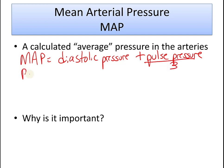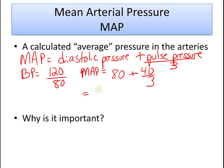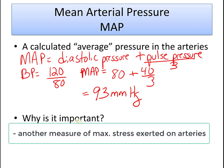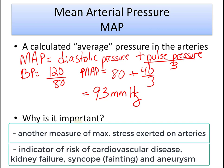For a blood pressure of 120/80: MAP = 80 + (40/3), which comes out to about 93 mmHg. This is the average pressure on the arteries for that blood pressure. MAP is another measure of maximum stress on arteries and is also an indicator of the risk of cardiovascular disease, kidney failure, syncope — another word for fainting — and aneurysms.